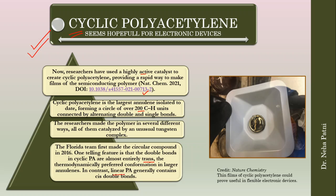In contrast, linear polyacetylene generally has cis double bonds, so that is a unique distinguishing feature. There are also multiple synthesis approaches researchers have used. One approach involves simply wafting acetylene over a vial coated with a catalyst solution, which created a flexible, shiny film of cyclic polymer within just a few seconds. A second approach is to produce cyclic polyacetylene in a soluble form.